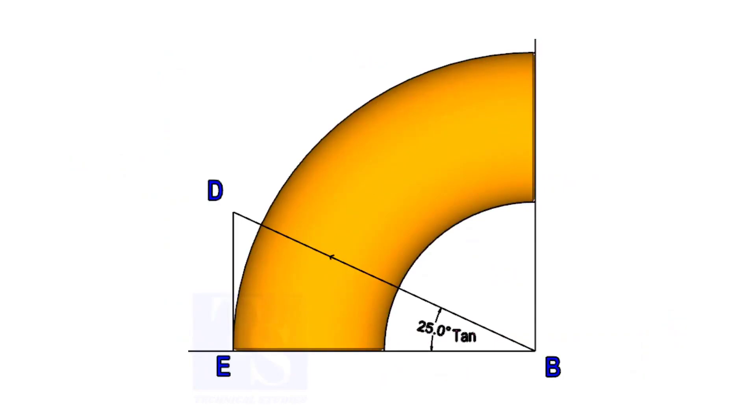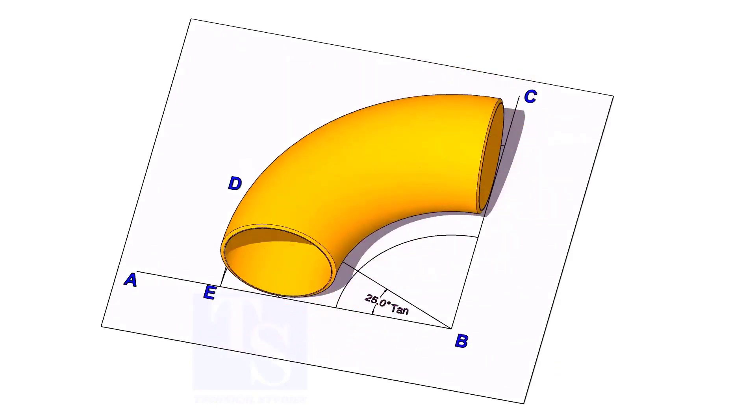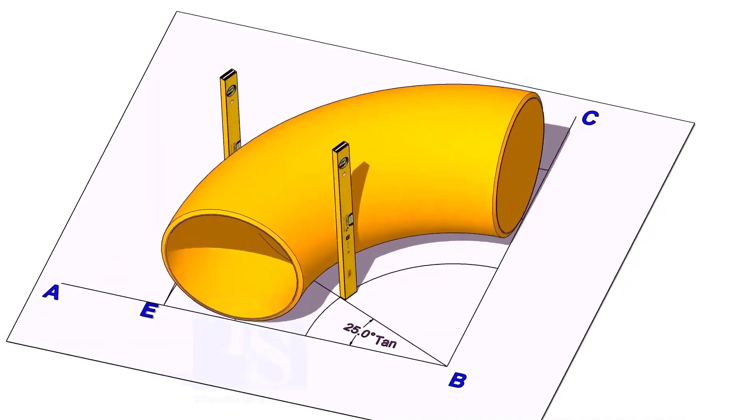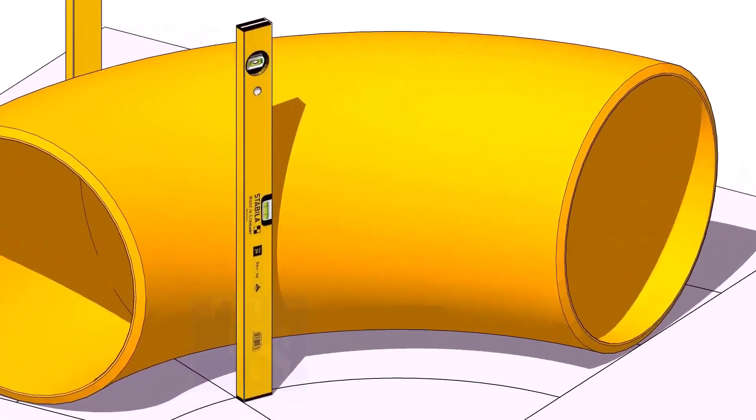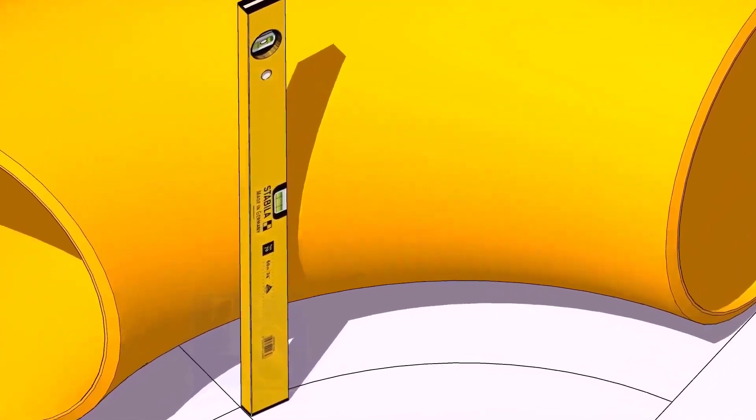Now, put the elbow exactly on the layout as shown. Hold two large level bottles at the edge of the elbow on both sides vertically, and strike a mark where the level bottle edge touches the elbow.